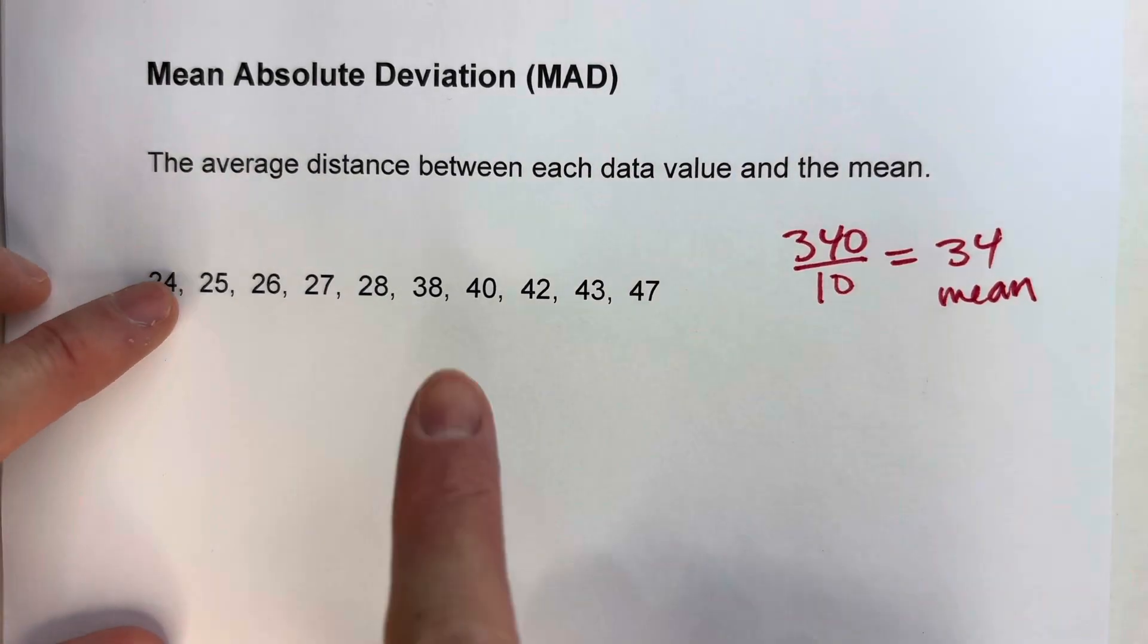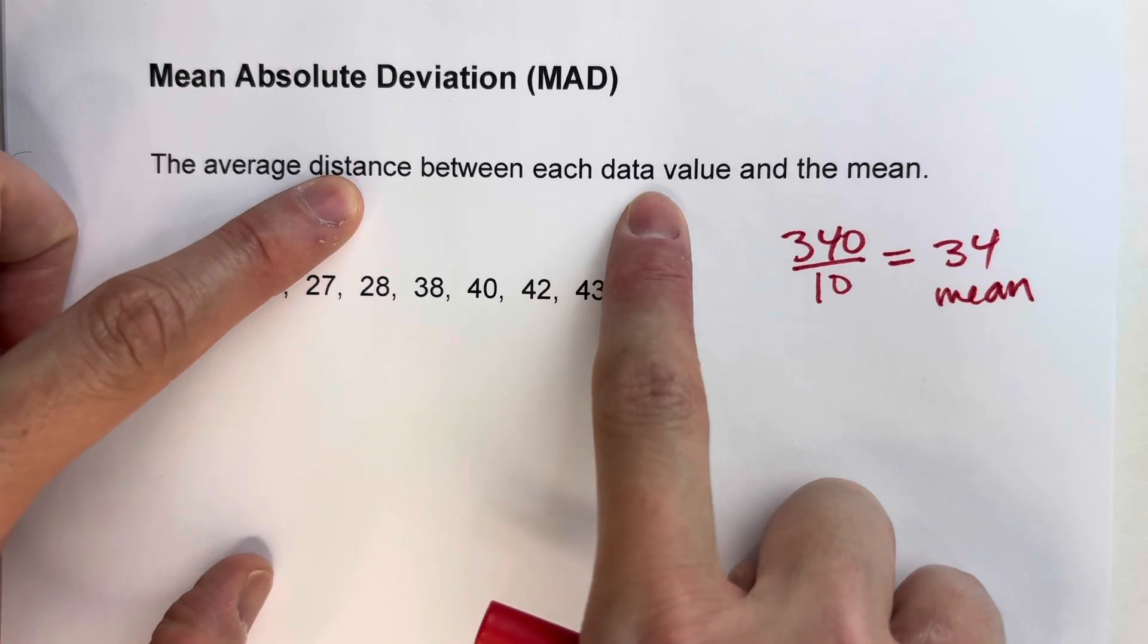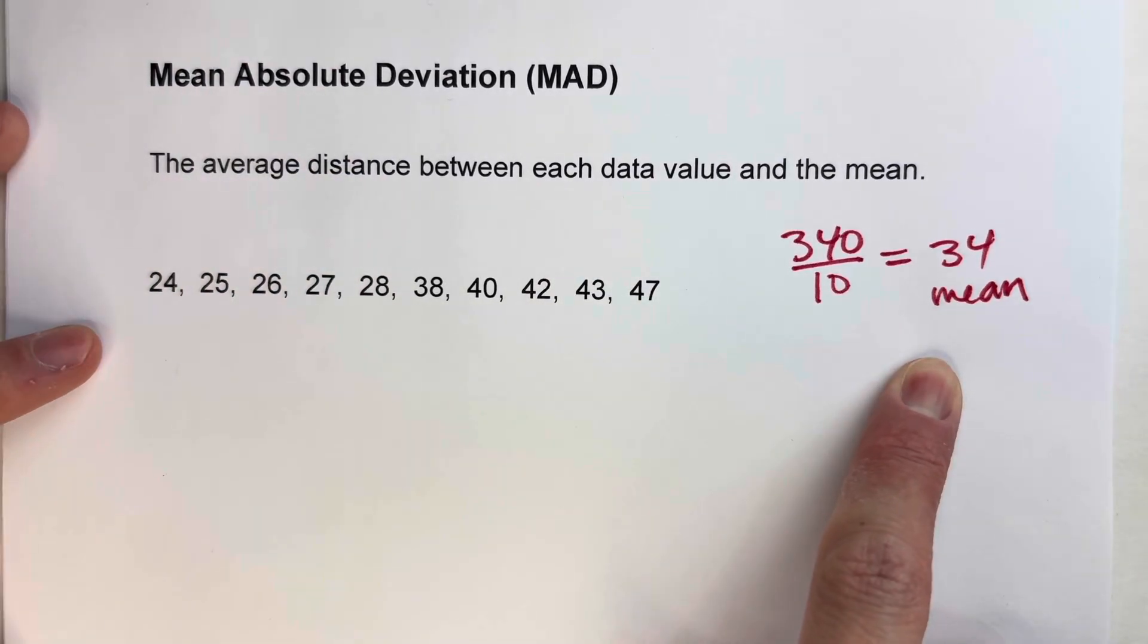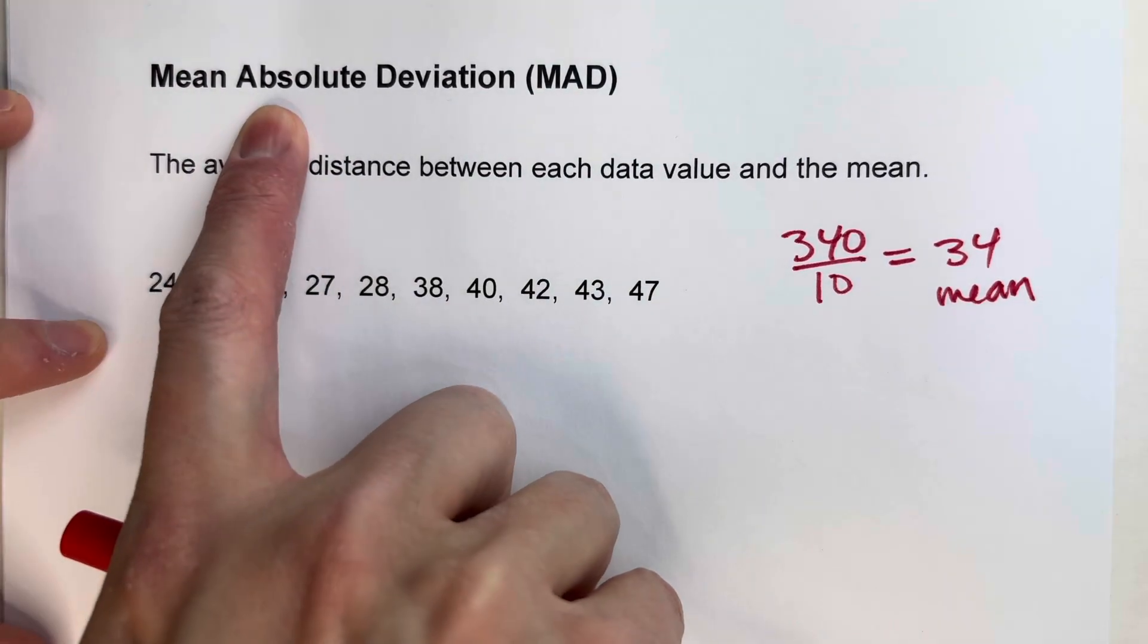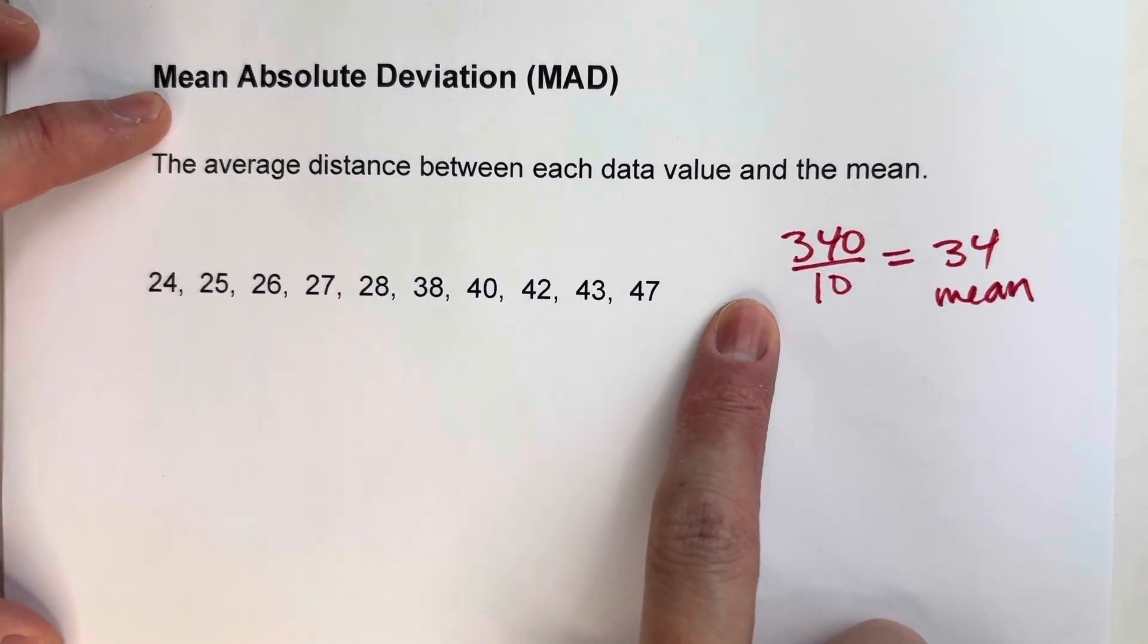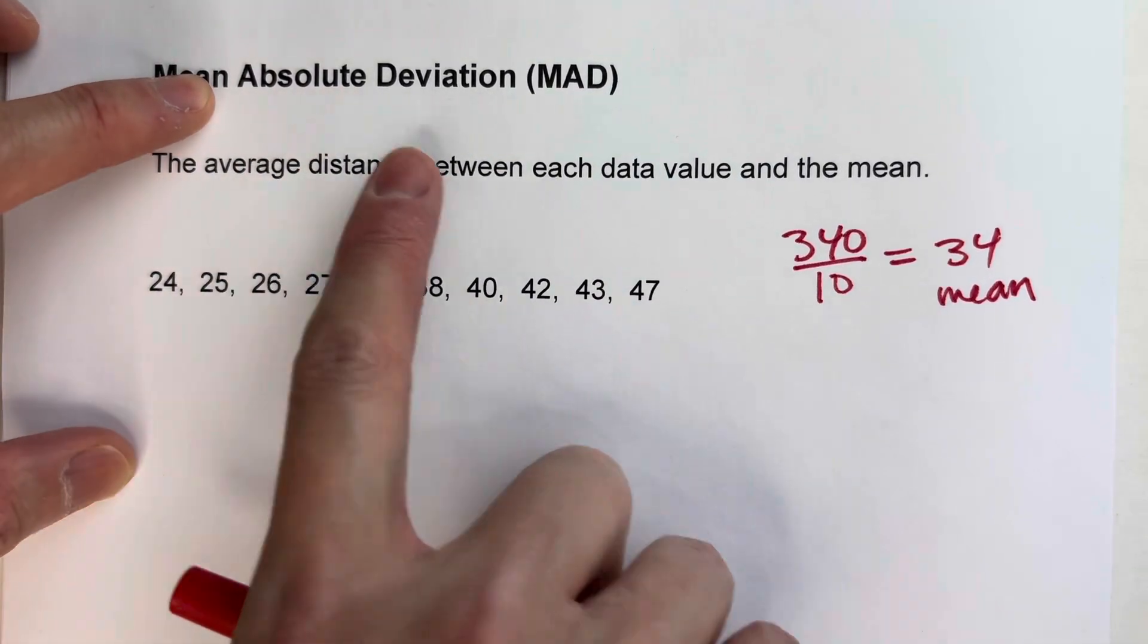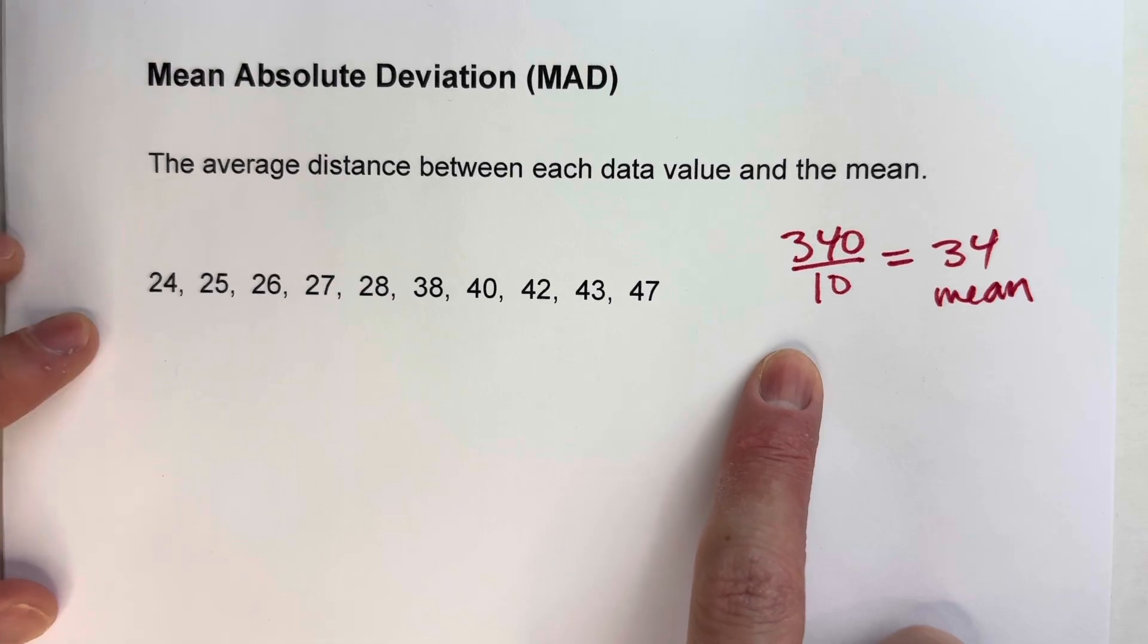Step two, we need to find the distance of each data value from the mean. Now it does say absolute deviation. So what that means is we're not going to take into account positive or negative. We're just going to think about how far away it is.